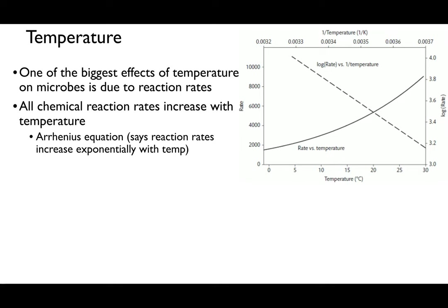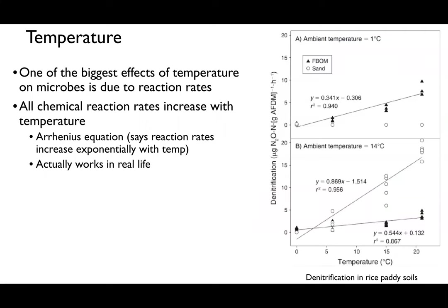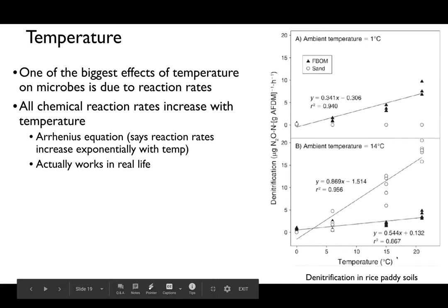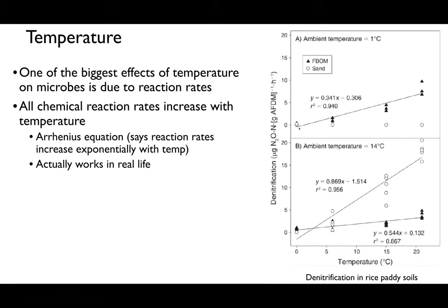There's an interesting relationship where, with temperature on the x-axis and reaction rate on the y-axis (log scale), as the environment gets warmer, reaction rates increase — this is the Arrhenius curve. Microbes metabolize faster under higher temperatures, and you can actually measure this in real life. For example, rates of denitrification in a rice paddy are directly correlated with temperature: as you increase temperature, you increase the rate of denitrification. Next up is pH.